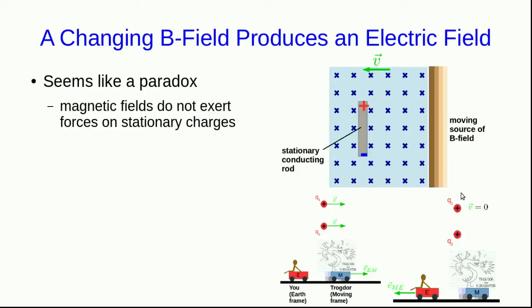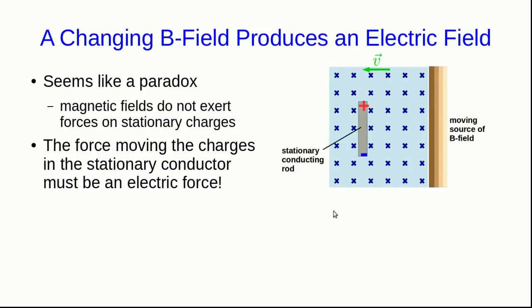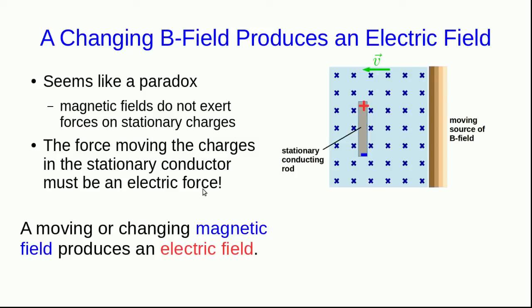But in another frame, where those two charges are stationary, you would only see an electric force acting between them. But both observers have to agree on the overall forces. And so what appears to be an effect of magnetic forces to one observer can be an effect of electric forces to another observer. And so in your frame, where that stationary conducting rod feels no magnetic forces, you must interpret the fact that the charges in it feel forces as an outcome of electric forces — in other words, you see a result of an electric field.